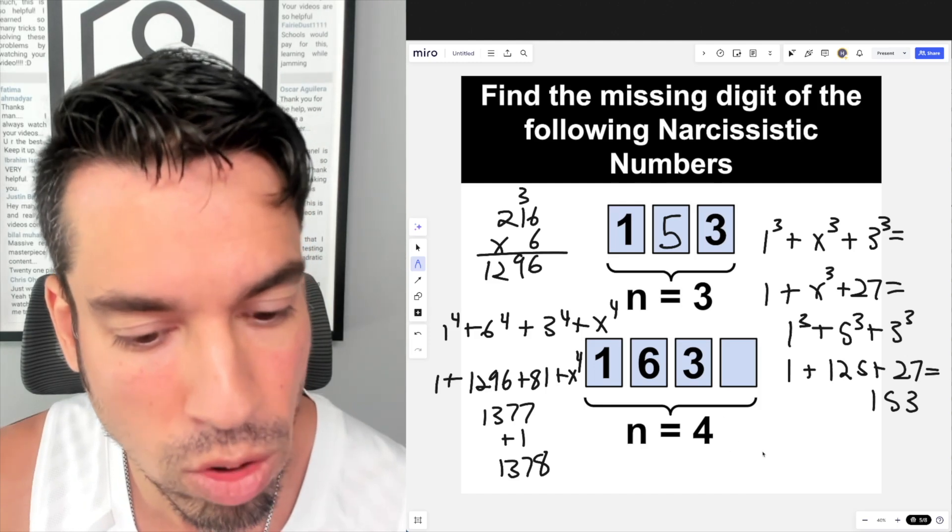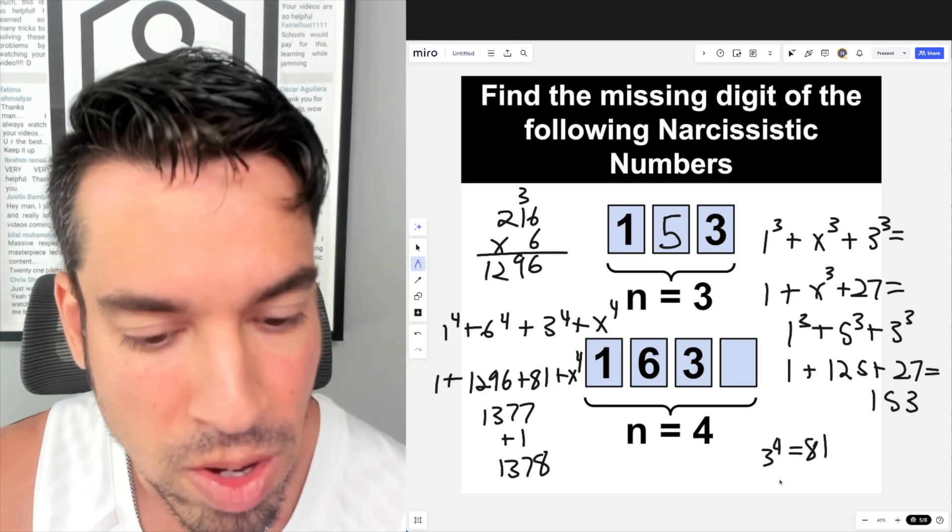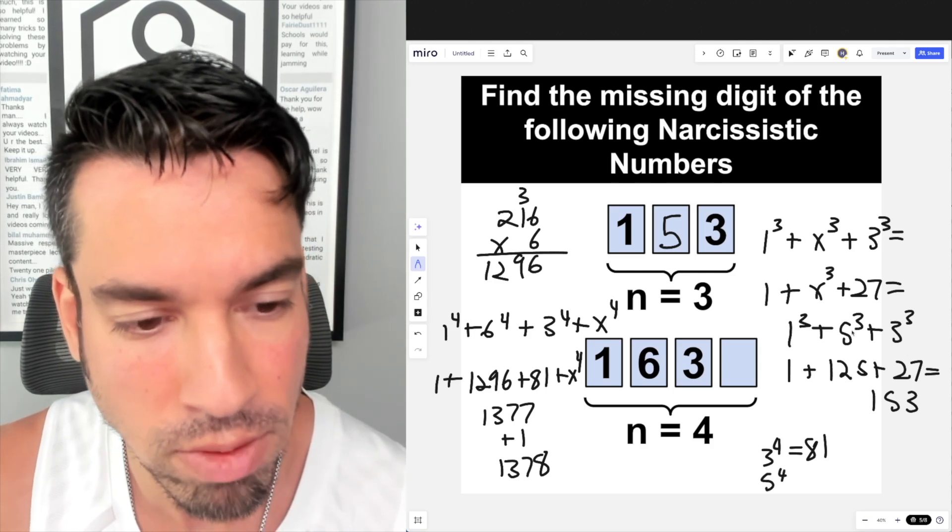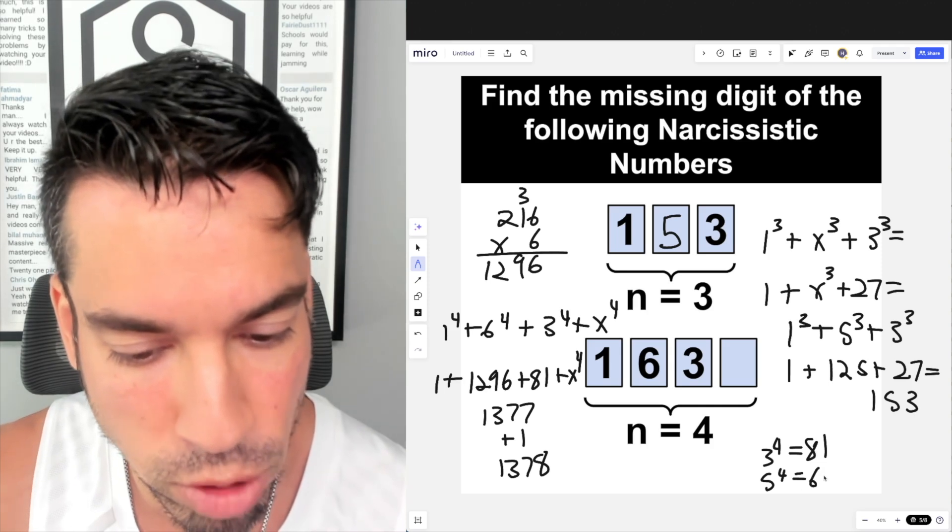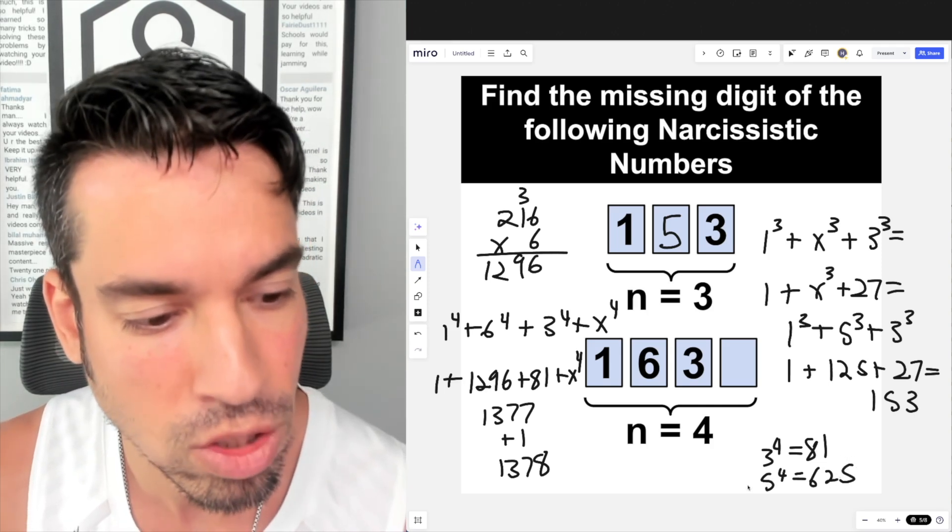So let's think about our possible values. We already know 3⁴ is 81, so that's going to be too small. What about 5⁴? Because we did calculate 5³ up here is 125. 5⁴ is 5 times 125, which is 625. So again, that's beyond the mark. So that means we are probably going to use 4.